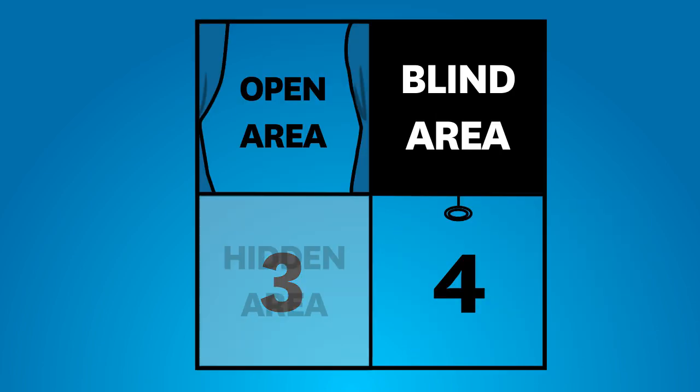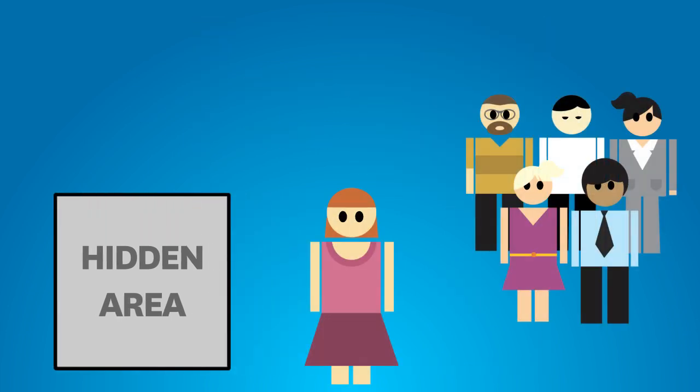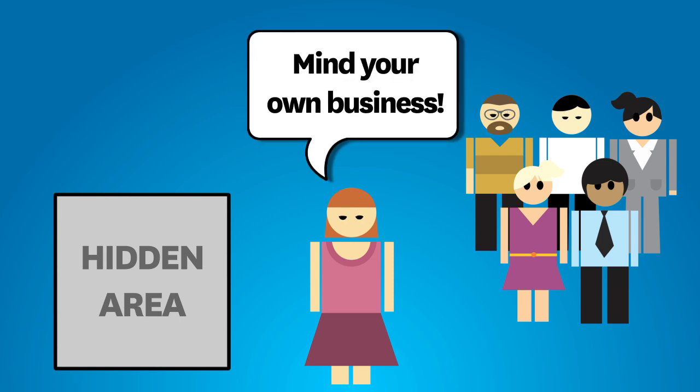The information in Area 3 is hidden. It's the stuff about Joe that she knows, but she doesn't want anyone else to know.